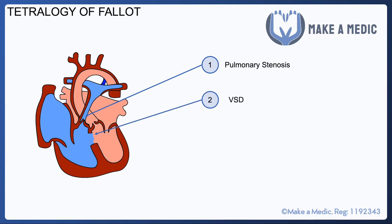There's a ventricular septal defect that allows blood to mix between the two sides of the heart. There is also an overriding aorta, which means that a large proportion of the outflow from the heart goes into the aorta and not the pulmonary artery. That's due in part to the pulmonary artery being stenosed and hence having high resistance, but also due to this overriding aorta which takes much of the blood from the ventricles.